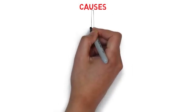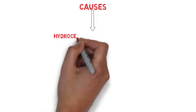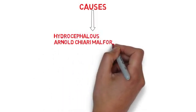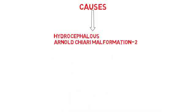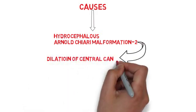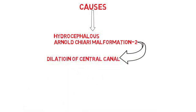The causes of this disease include conditions which cause obstruction of the outflow via the central canal of the spinal cord. These include hydrocephalus and Arnold Chiari malformation type 2. In both these pathologies, there is an obstruction to the outflow resulting in the dilation of the central canal.